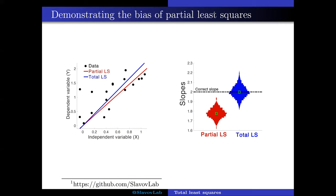and then plot the distribution of slopes from the partial least squares, in this case here showing the red distribution, and the total least squares, in this case here showing the blue distribution.